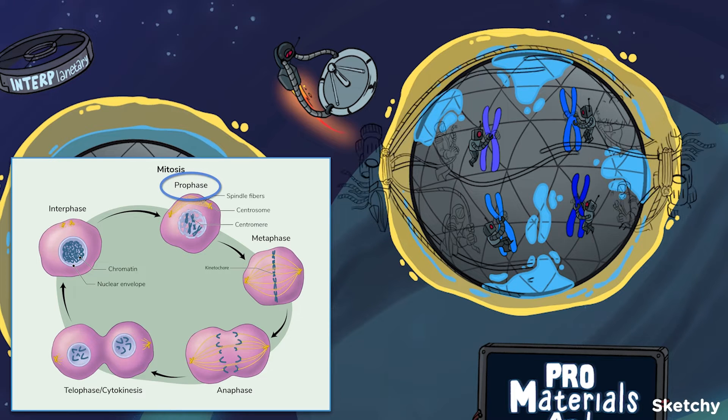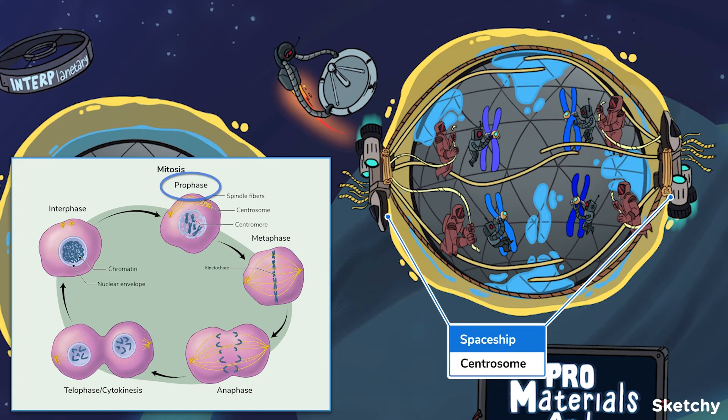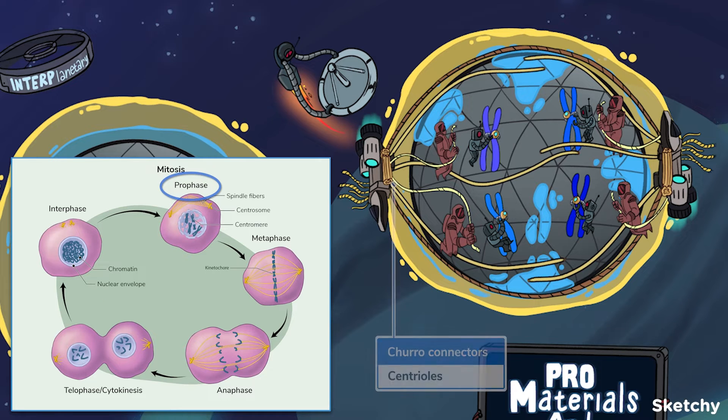Organelles known as centrosomes travel to opposite ends of the cell. They function as the primary microtubule organizing center. These spaceships will help you remember the centrosomes. They'll direct how the building materials move around the station. Each centrosome consists of a pair of cylindrical microtubules called centrioles. These structures look just like churros. Mmm, churros. Anyways,